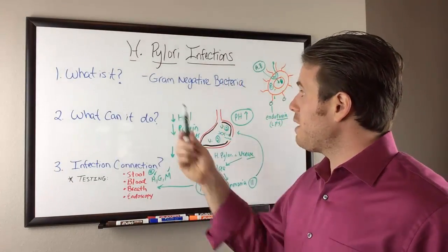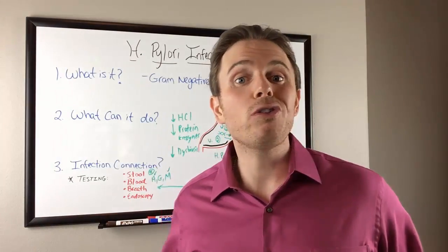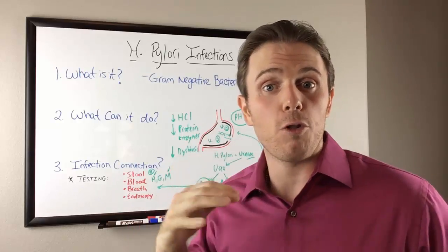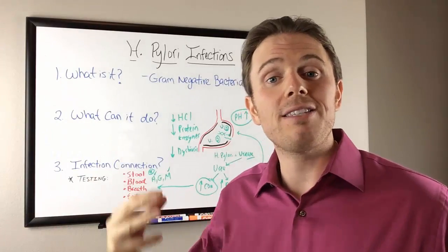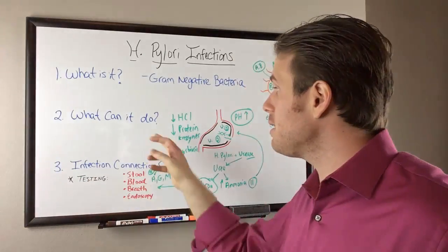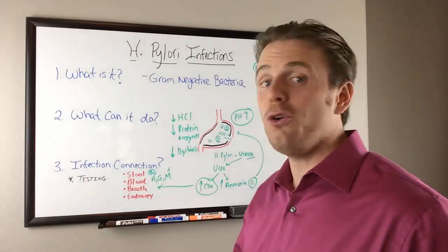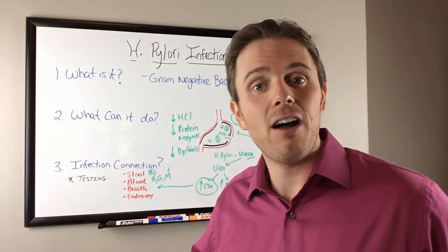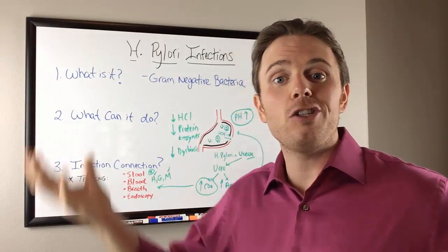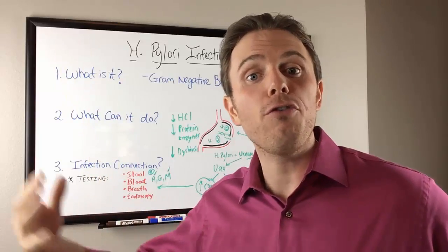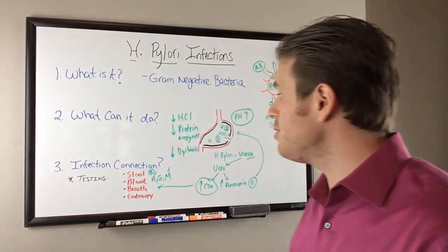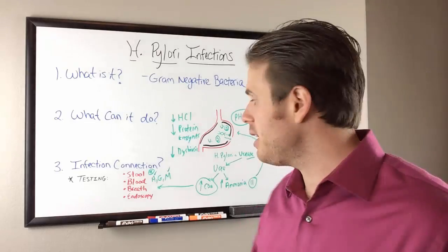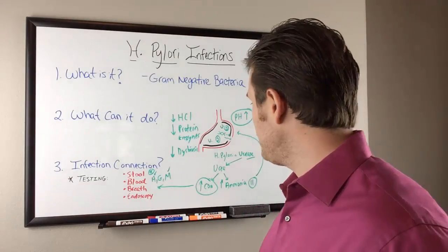To recap: H. pylori is a gram-negative bacteria with two cell walls, very hard to get over the moat and the drawbridge, so herbal medicines tend to do best. It decreases protein digestion, decreases HCl, and increases the chance of dysbiosis and other future infections.